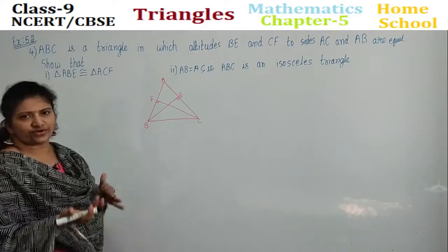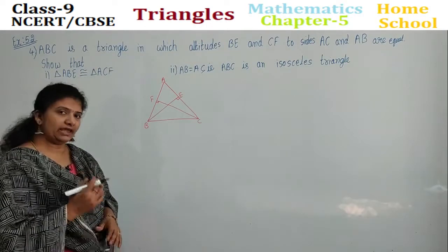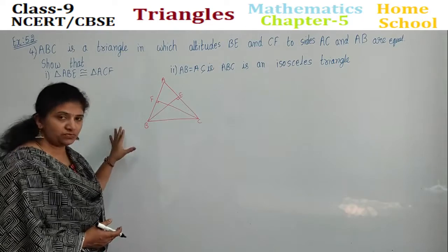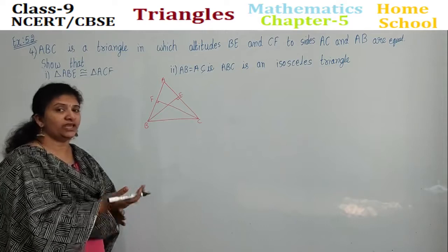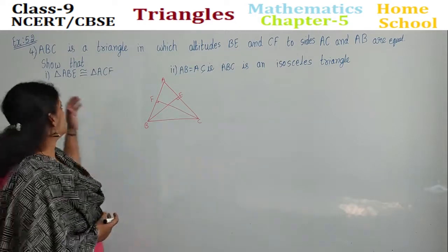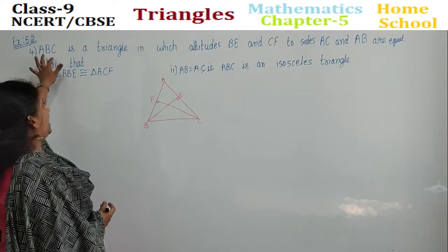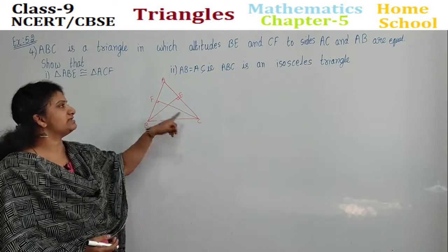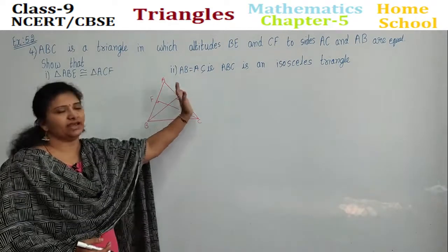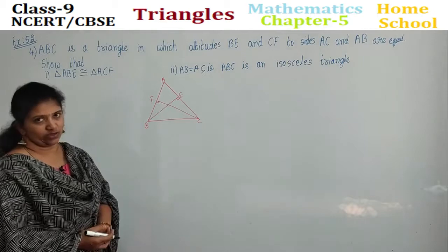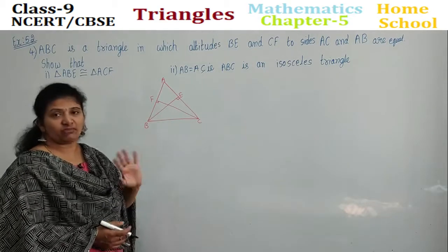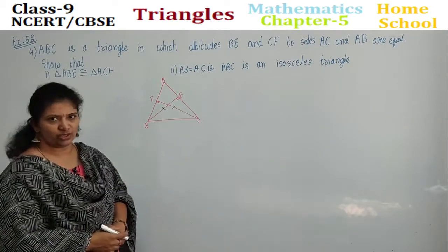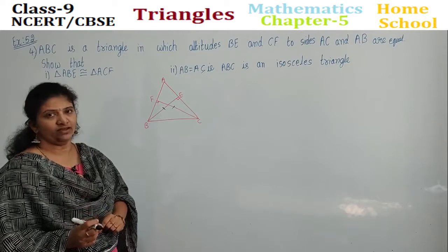Fourth problem — just the reverse of the third problem. There they gave it is an isosceles triangle and asked to prove altitudes equal. Now in this problem, altitudes equal are given and we need to prove that the triangle is isosceles. ABC is a triangle in which altitudes BE and CF to sides AC and AB are equal given. Altitudes are equal.